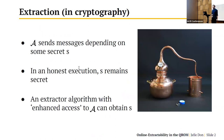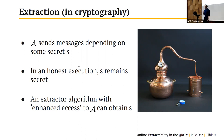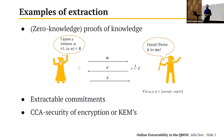Let's do a quick recap of what extraction is and where we find it in cryptography. We find it in a context where some algorithm A sends messages that depend on some secret s. In an honest execution, s remains secret, but there exists an extractor algorithm that, given some kind of enhanced access to the algorithm, can recover the secret s.